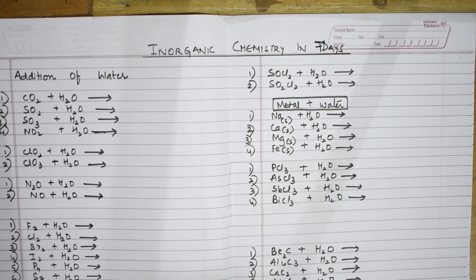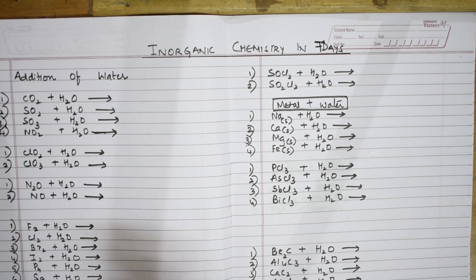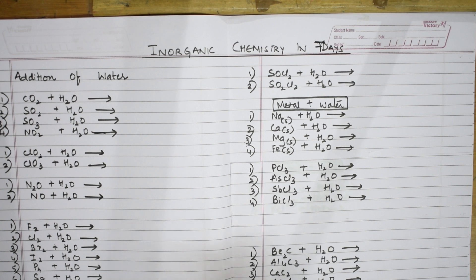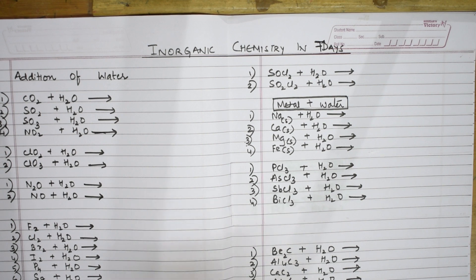Before I start, let me discuss what we are going to cover: reactions with water, reactions with sodium hydroxide, reactions with acids including HCl, acetic acid, sulfuric acid, and nitric acid, reactions with ammonia, reactions with carbon, carbon dioxide, sulfur dioxide, oxygen, and hydrogen. My series also includes reactions that form no products, reactions with potassium iodide, and reactions involving complex formation.